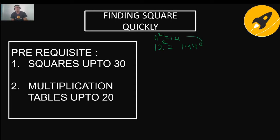You can notice a pattern: you add two consecutive numbers to get the next square. 12 + 11 = 23, add 23 to 121 and you get 144. For 13²: add 13 + 12 = 25, add 25 to 144 to get 169. This pattern of adding the sum of two consecutive numbers gives you each successive square.